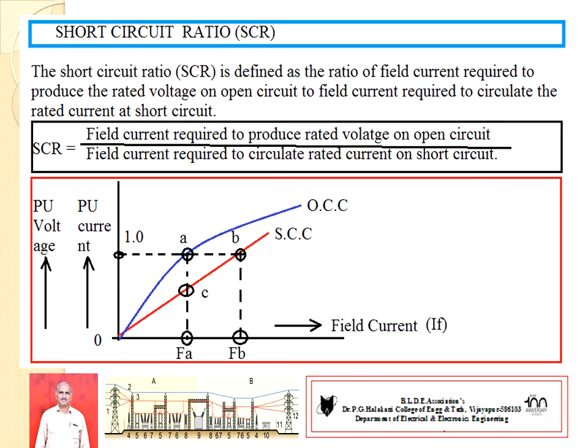By conducting the open circuit test and short circuit test, you plot the graph. From the definition: SCR equals the field current required to produce the rated voltage on open circuit, divided by the field current required to circulate rated current on short circuit. Refer to the diagram — OFA is the field current required to produce the rated voltage on open circuit, meaning the terminals of the alternator are kept open.